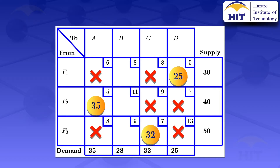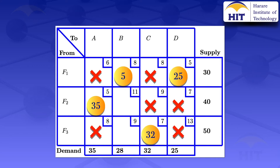We move on to the next least cost, which is an eight. Looking at that cell, the supply capacity for F1 is 30 but we have already allocated 25, so the remaining supply is 30 minus 25 = 5 units. The demand constraint is 28. We take the minimum of 5 and 28, giving us 5, so we allocate 5 units in that cell.